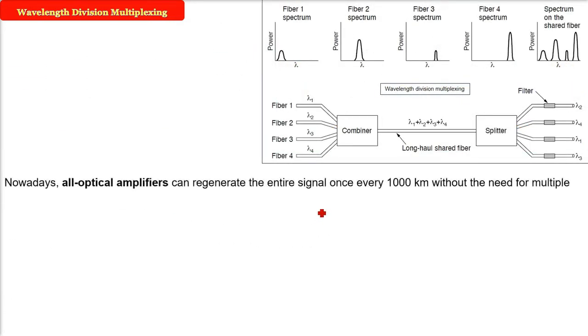In WDM, we have to have a conversion because some amplification has to be done. So, we need some electro-optical amplifiers you can see. But, now, today, all are optical, that is all optical amplifiers, they can regenerate the entire signal over once, every 1000 km without the need for multiple amplification. Previously, that were there. And what were there? Because, there were optoelectrical conversions need to be done. But, now, it is not required. We have all optical amplifiers.